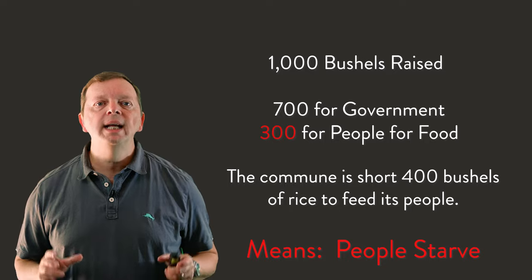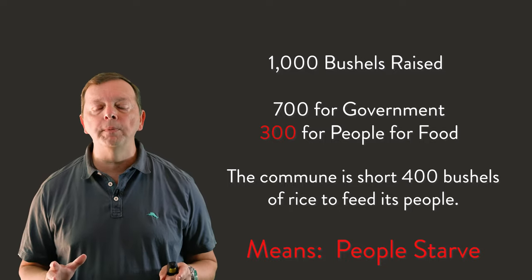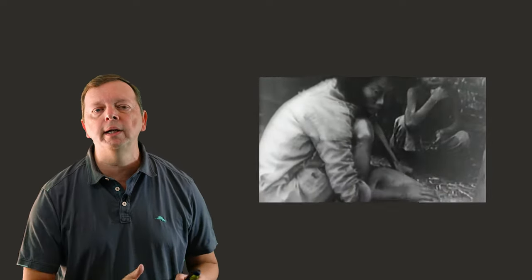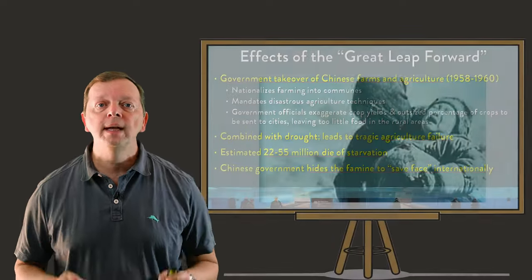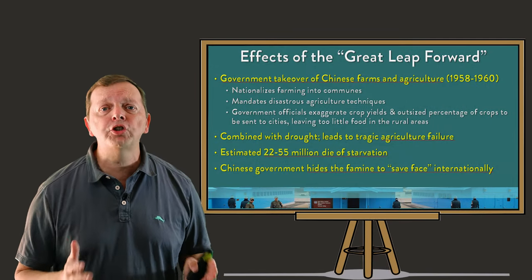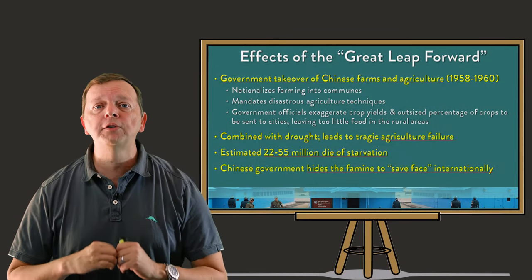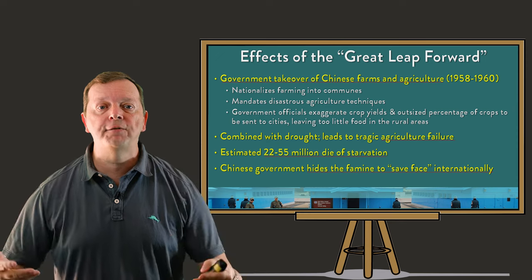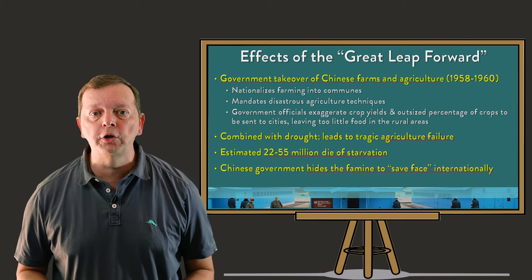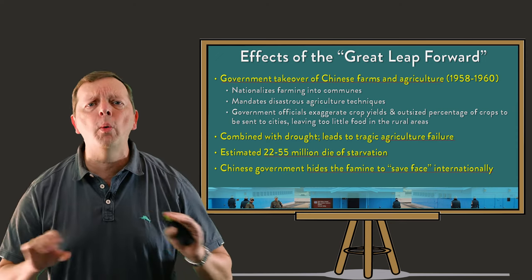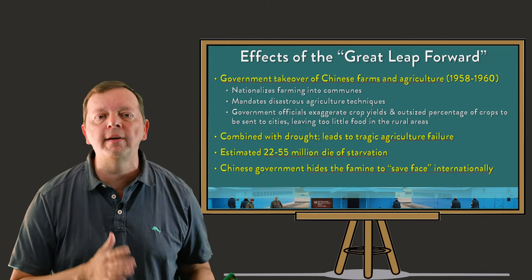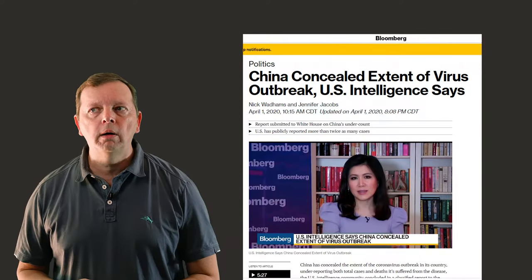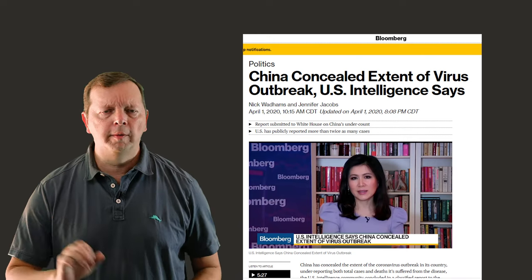In the end, lots of people in China did not survive the Great Leap Forward. It is estimated that in these three years, anywhere between 22 to 55 million Chinese would die of starvation. Instead of asking for the world to help, the Chinese government hid all this from the world in order to save face and avoid embarrassment. Fortunately — well, never mind.